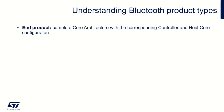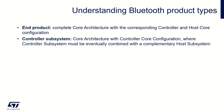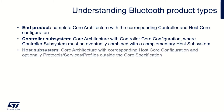An end product supports a complete core architecture with the corresponding controller and host core configurations, and optionally protocols, services, and profiles outside the core specification. Host subsystem supports the core architecture with the corresponding host core configuration. Controller subsystem supports the core architecture with the corresponding controller core configuration, and optionally protocols, services, and profiles outside the core specification. A host subsystem must eventually be combined with a complementary controller subsystem to create a complete Bluetooth solution.